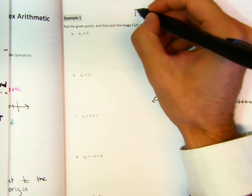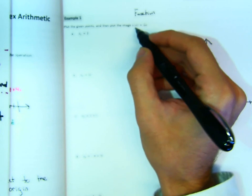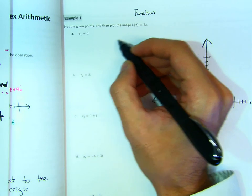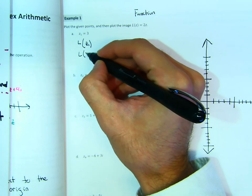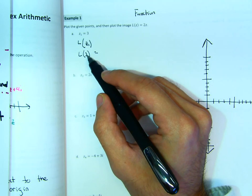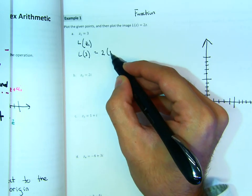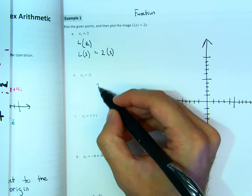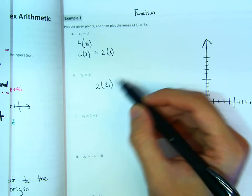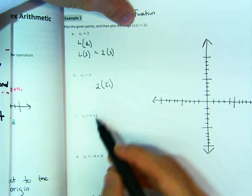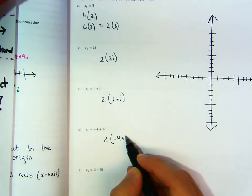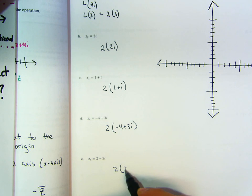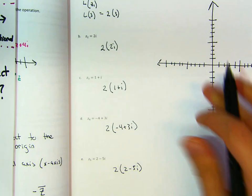The notation is a little unusual, but this is a function. If L(z) = 2z, and z₁ = 3, then L(3) = 2×3. L(z₂) = 2×2i. L(z₃) = 2×(1+i). L(z₄) = 2×(−4+3i). L(z₅) = 2×(2−5i). The function is just telling you to do 2 times whatever you're plugging in.